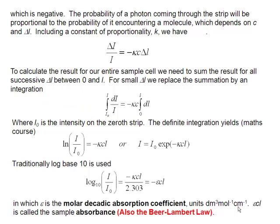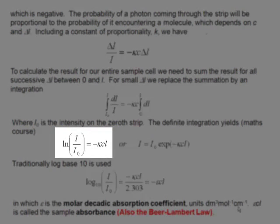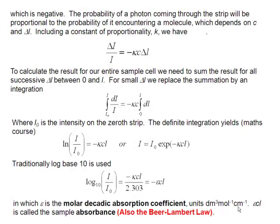And we're now calling our intensity, which hits the zeroth strip, I0. And we integrate over all of those strips until we get to the final intensity, I. And that gives you the equation ln I over I0 is equal to minus kCL, which we can rewrite as an exponential function.